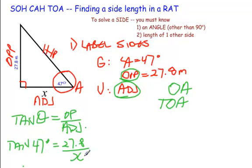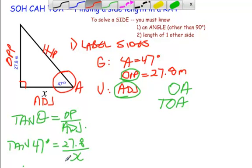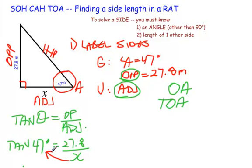Now in order to solve this, we first have to bring our X. We're going to multiply it over onto the other side of the equal sign, the opposite of dividing. So we have X times tan of 47 is equal to 27.8.